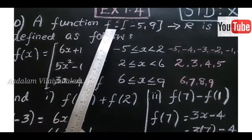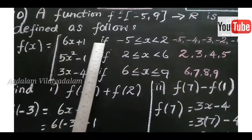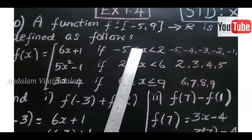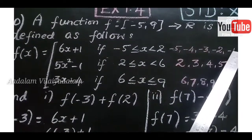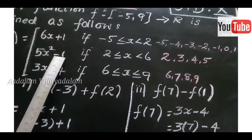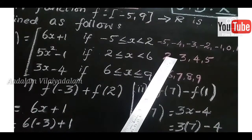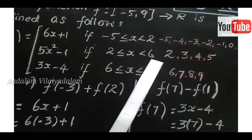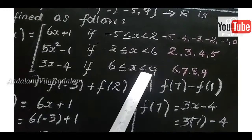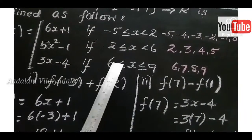A function F such that [minus 5, 9] tends to R is defined as follows: F of X equals 6X plus 1 if minus 5 less than or equal to X less than 2 (values from minus 5 to plus 1). Second: F of X equals 5X squared minus 1 if 2 less than or equal to X less than 6 (values 2, 3, 4, 5). Third: F of X equals 3X minus 4 if 6 less than or equal to X less than or equal to 9 (values 6, 7, 8, 9).